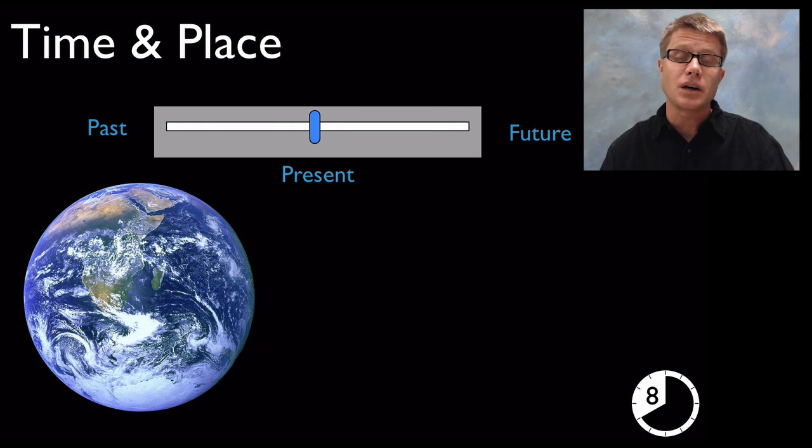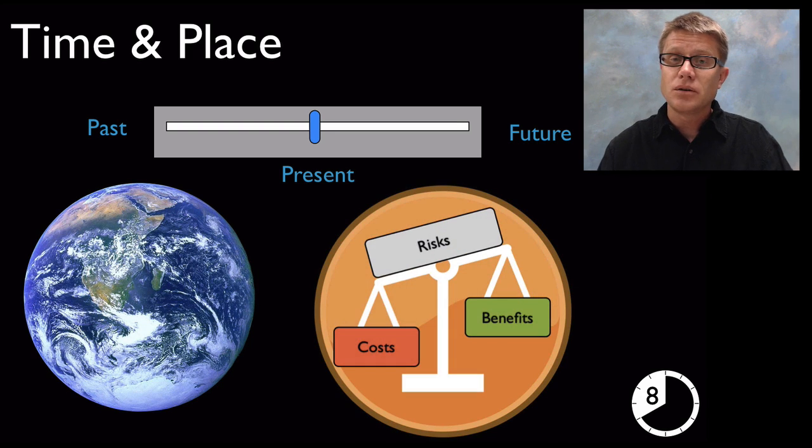As we move into middle school we want to talk about not only time is going to affect engineering and science and technology, but also place, where you are on the planet. The solutions here in the United States are going to be different than those in a different country at a different time. What we have to do is locally weigh those costs, benefits and then put those against the risks.